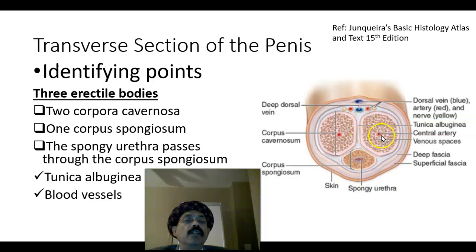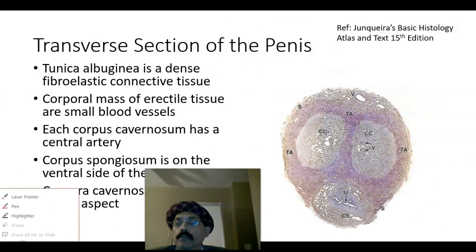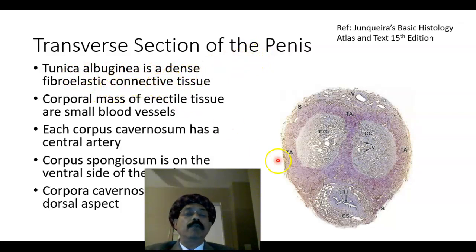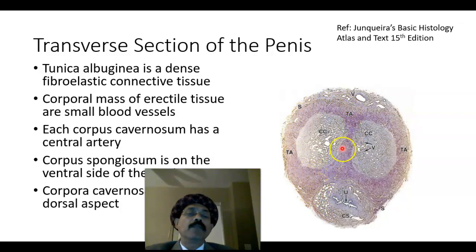There are many blood vessels on the dorsal aspect, and there is a central artery of the penis that passes through the corpus cavernosum. Tunica albuginea is a dense fibroelastic connective tissue. It surrounds the corpus cavernosum and also surrounds the corpus spongiosum, where it is comparatively thinner than around the corpus cavernosum.